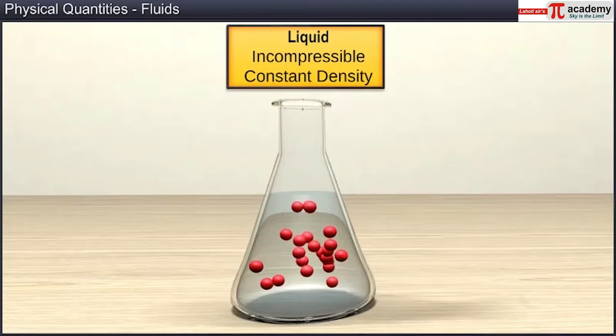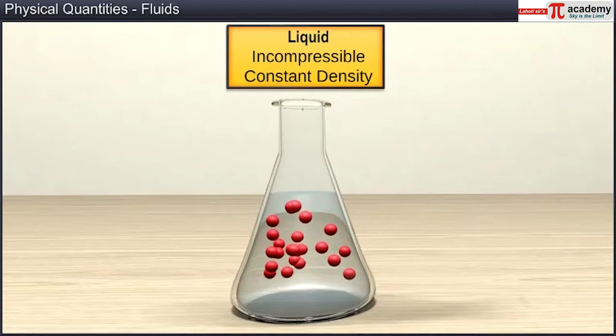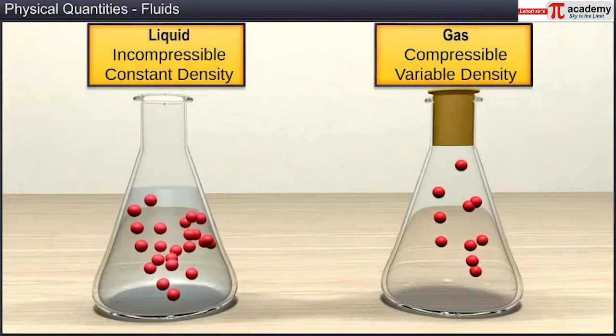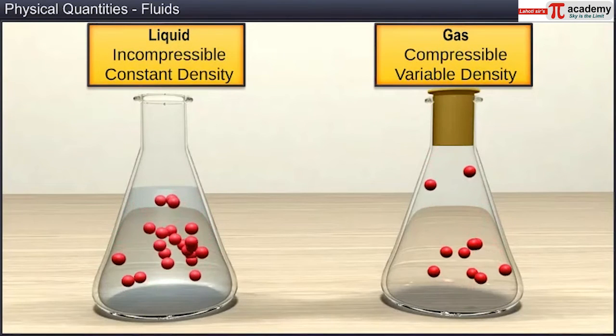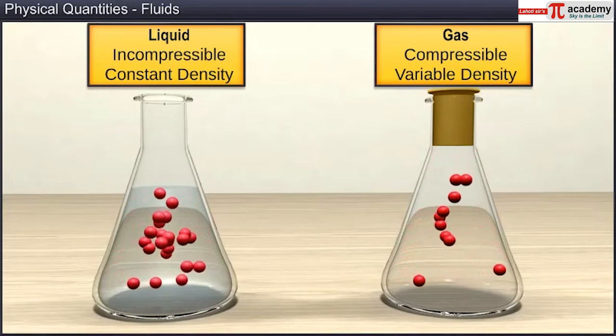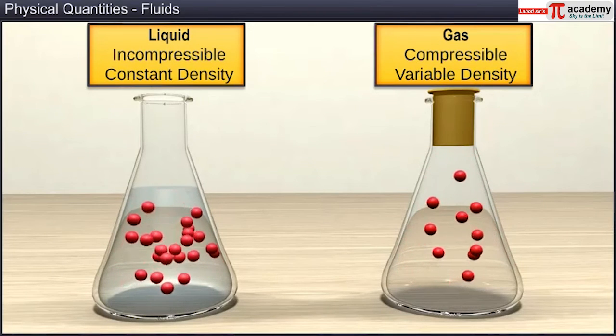Density of a liquid is almost considered constant at all pressures, as it is largely incompressible. However, gases exhibit huge variations in the densities at different pressures, as they are compressible.